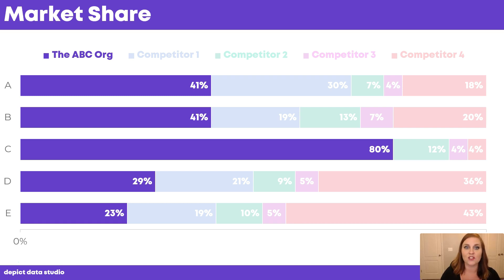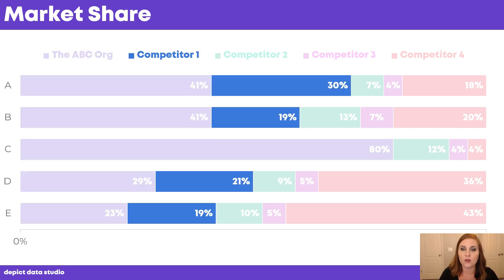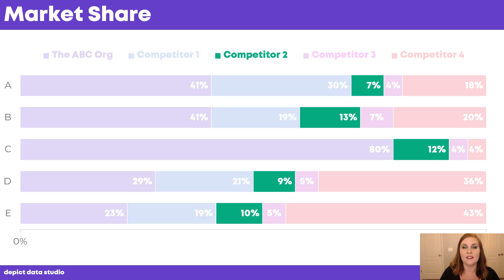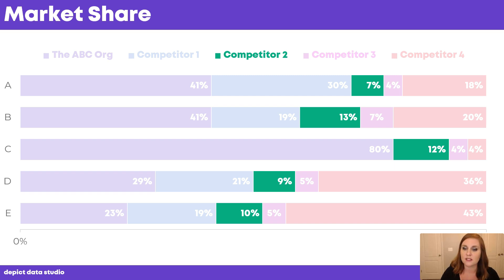Then you'd say: 'Now let's turn our attention to our nearby competitor down the street — competitor one, shown here in blue. They provide 30% of Service A and 19% of Service B. But Service C — where we provide 80% — they don't provide that service at all. There's a huge difference between us and competitor one when it comes to C.' Then you'd click to competitor two in green — it just jumps off the slide. Competitor two provides only 7% of Service A, 13% of Service B, and 12% of Service C. While we need them on our radar, they're really just a small sliver.